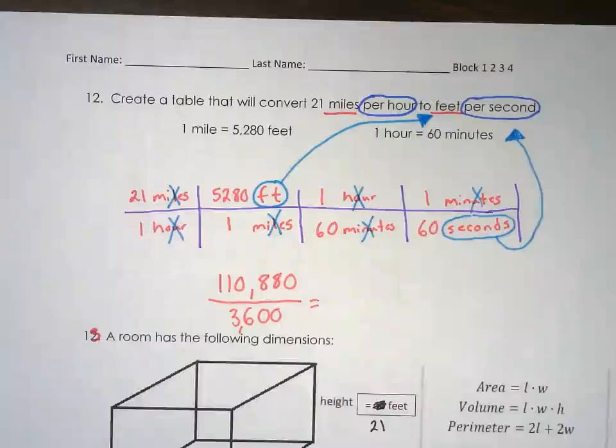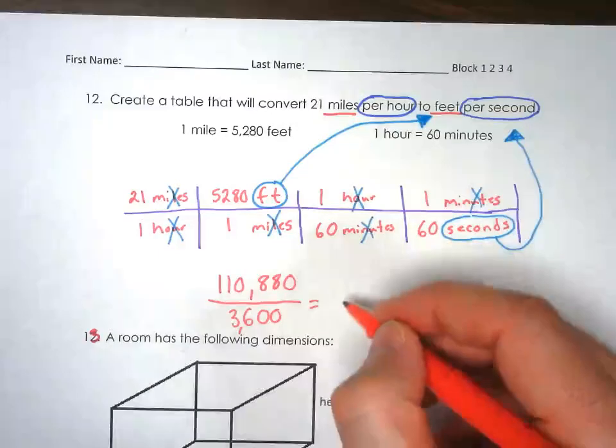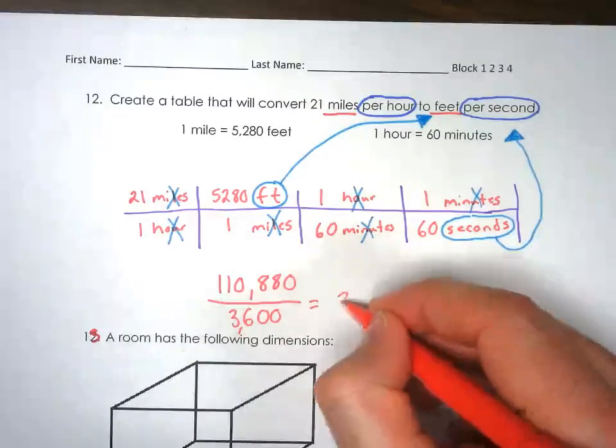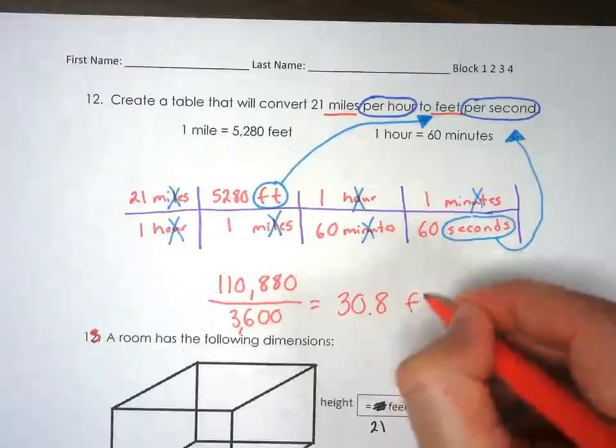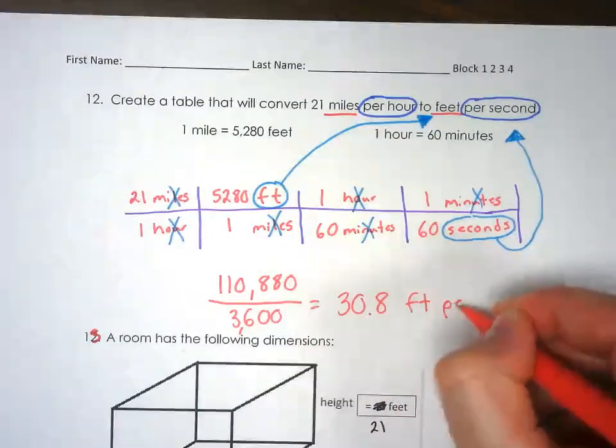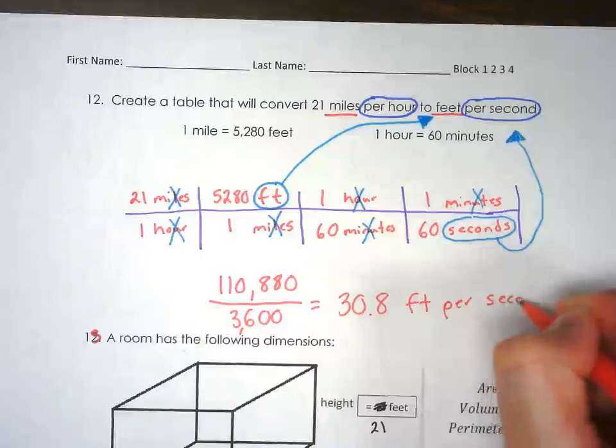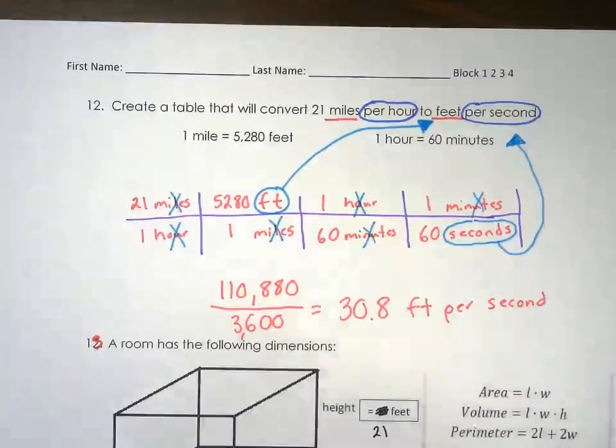That gives you 3,600. We need to divide those: 110,880 divided by 3,600. The answer will be 30.8 feet per second. That'd be the answer there.